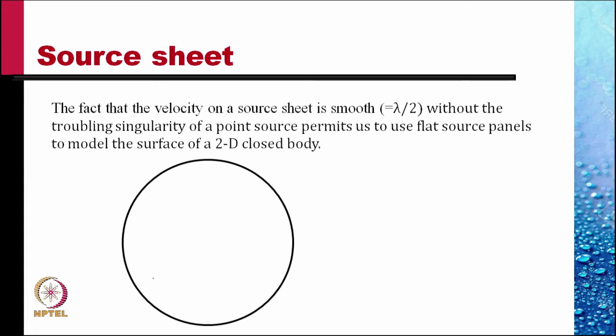Consider a circular cylinder. We divide this circumference up into a number of panels, flat panels, and for each flat panel we assume a source strength.